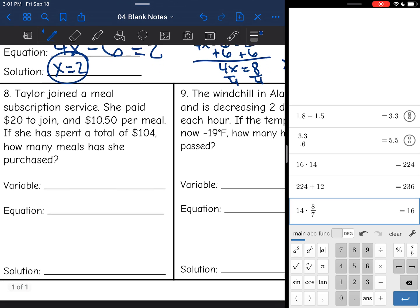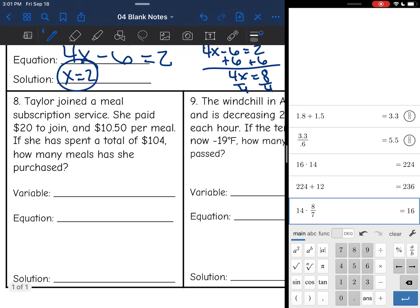Okay, let's look at number 8. We want to define the variable first. That will tell us what we're missing, and then it'll be easier to write the equation. So let's read and try to think about what the missing part is. It says Taylor joined a meal subscription service. She paid $20 to join and $10.50 per meal. If she spent a total of $104, how many meals has she purchased? So that is the missing part. That will be our variable. We will let x be the number of meals.